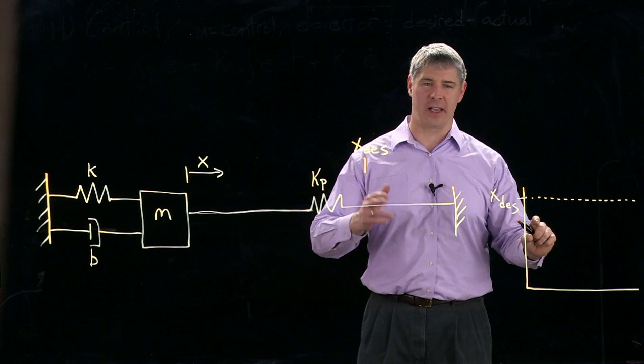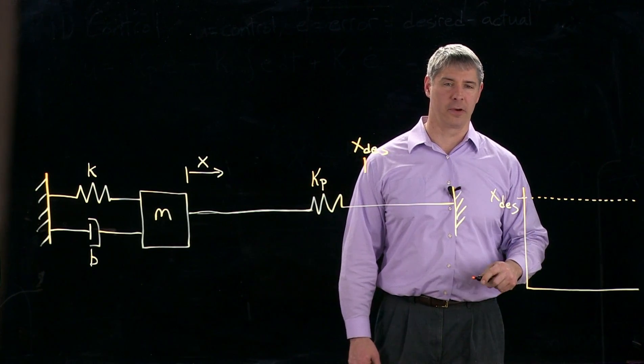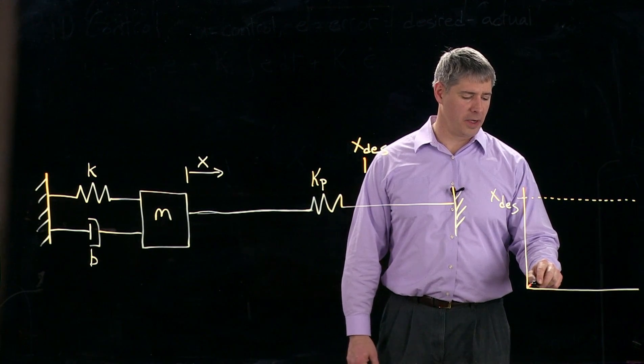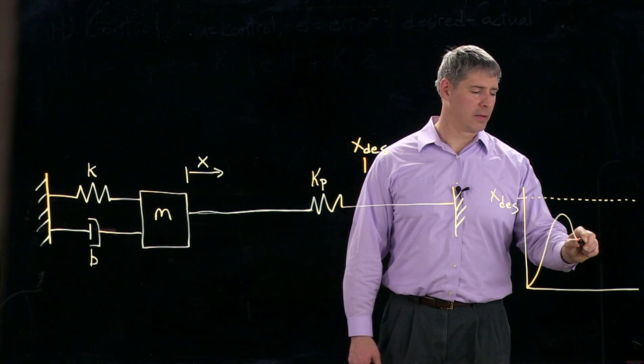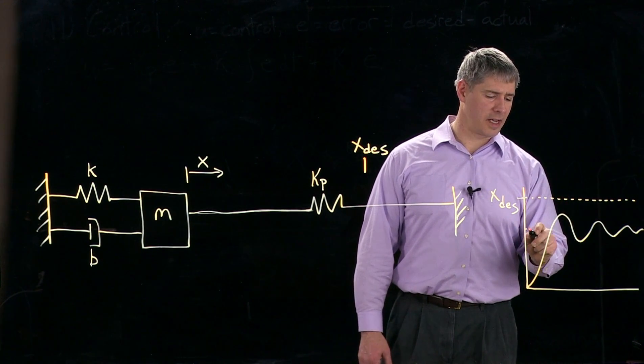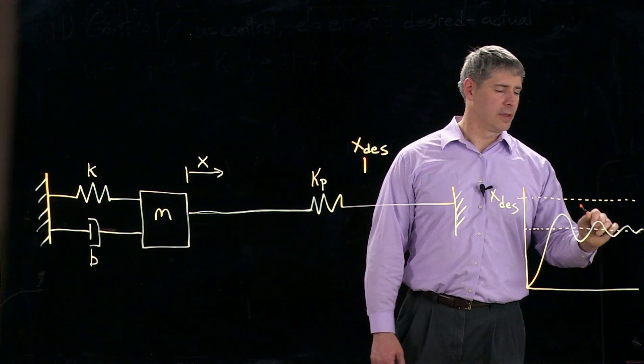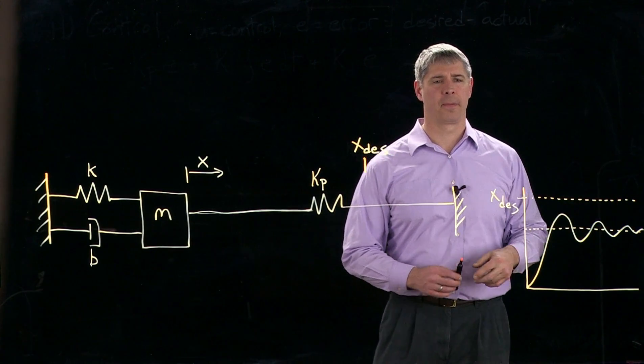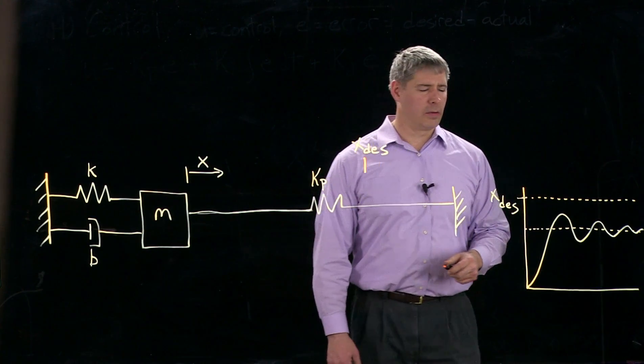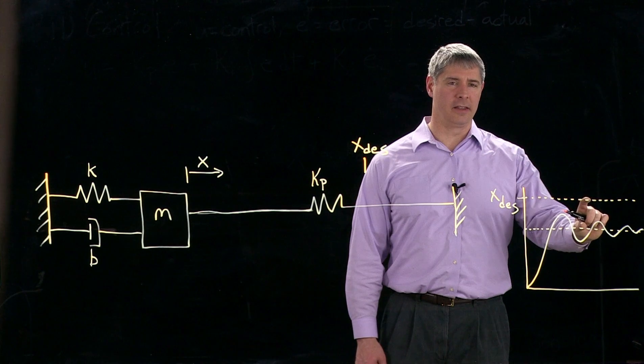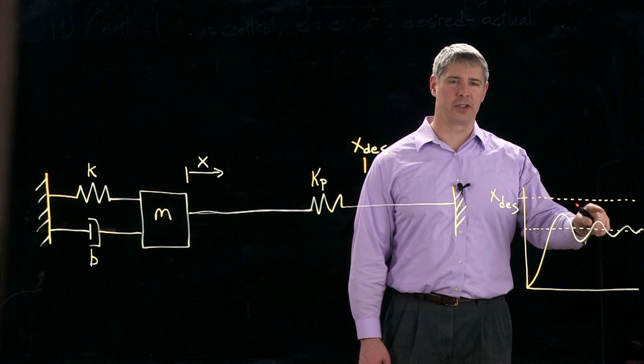Otherwise the spring, this case of P spring, wouldn't be applying any force. So the response of the mass when we attach the spring might look something like this and settles out so that there is some non-zero steady state error here. So apart from the fact that we have this error at the end, we also have the fact that we overshoot and oscillate.